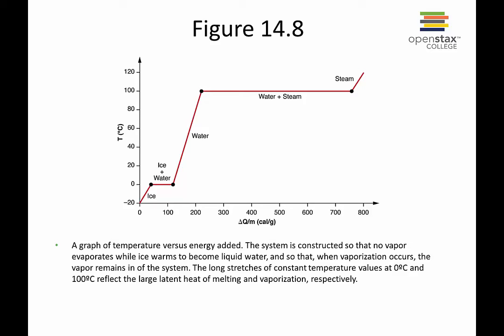If we look at something as it's heating up — this is a picture from your book — on the bottom axis we're adding energy and on the vertical axis we're looking at temperature. What you find is that when we have a little bit of ice, as you add heat, it increases in temperature. This is just from Q = M of ice times C of ice times delta T, where delta T goes from minus 20 to zero. Then there's this part where you keep adding energy but the temperature doesn't actually change. The reason is that you're melting the ice here.